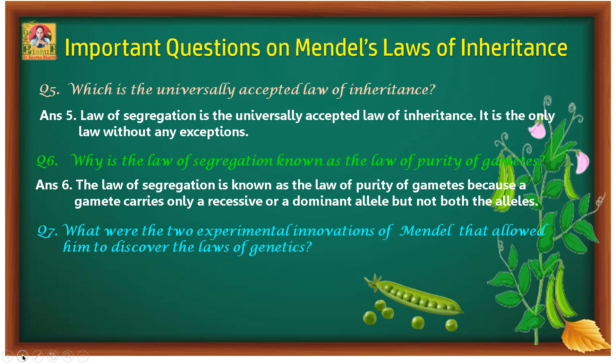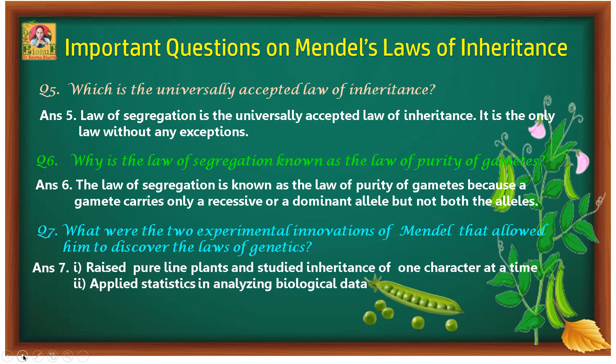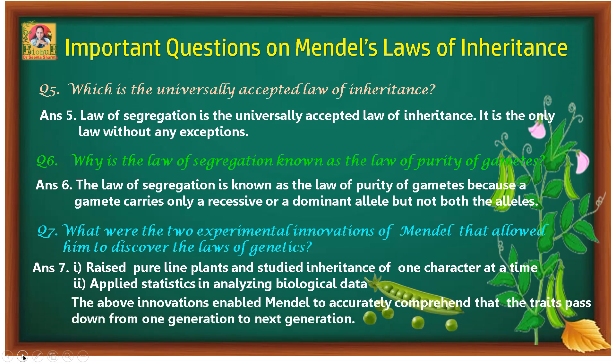Seventh question: what were the two experimental innovations of Mendel that allowed him to discover the laws of genetics? Mendel was not the only person trying to find out the reason for inheritance of characters — there were other scientists working in the same area — but Mendel succeeded. He raised pure line plants and studied the inheritance of one character at a time, whereas the rest of the researchers were studying the organism as a whole.